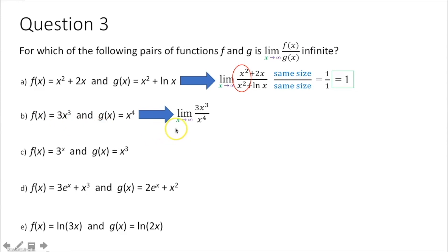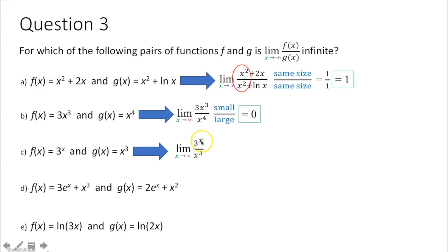For part c, we have the limit as x approaches infinity of 3 to the x over x cubed. When x is in the exponent and you're raising a constant to the x power, that number gets bigger than any polynomial. So 3 to the x grows far faster than x cubed, meaning the numerator dominates and the limit approaches infinity. This is our answer.